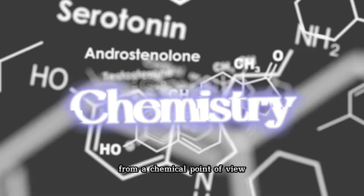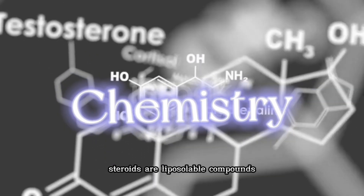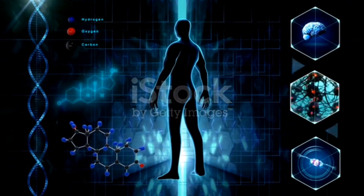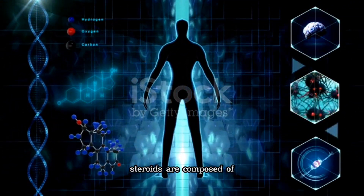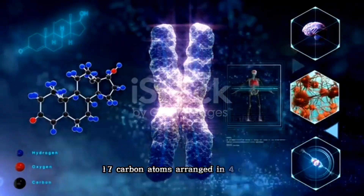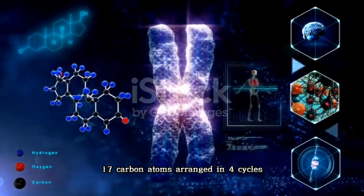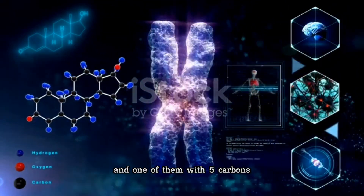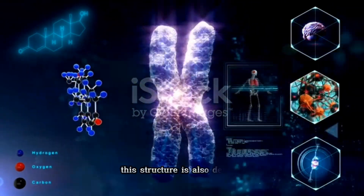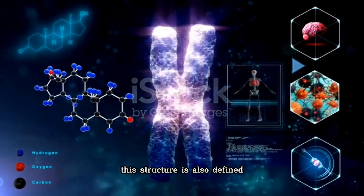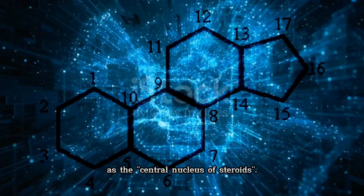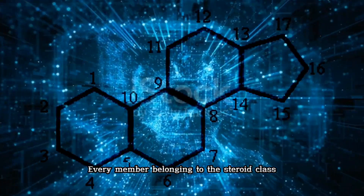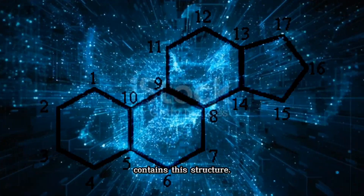From a chemical point of view, steroids are liposoluble compounds derived from tetracyclic terpenes. Steroids are composed of 17 carbon atoms, arranged in 4 cycles: 3 cycles of 6 carbons and 1 with 5 carbons. This structure is also defined as the central nucleus of steroids. Every member belonging to the steroid class contains this structure.